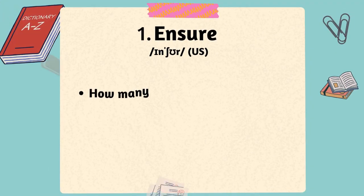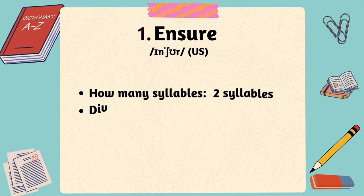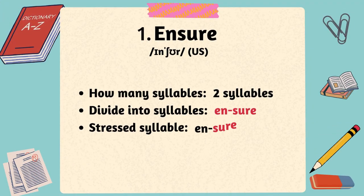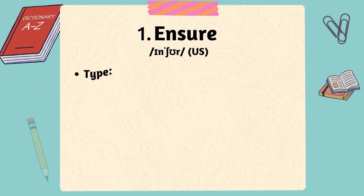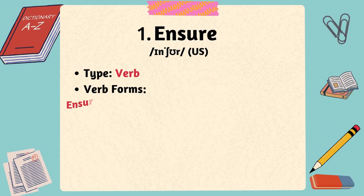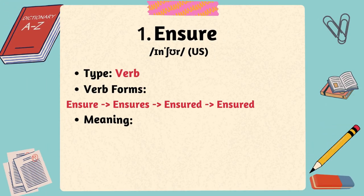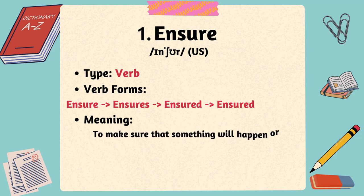The first word is ensure. The word ensure has two syllables, with the stress on the second syllable. Ensure is a verb and can mean to make sure that something will happen or be carried out, to guarantee or secure.